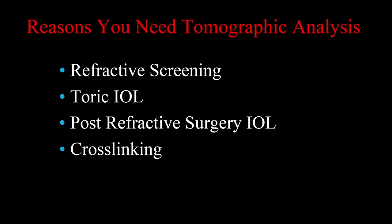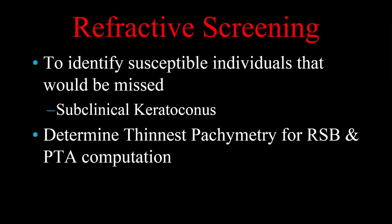So why do you need tomographic imaging or tomographic analysis? We need it for refractive screening, for toric IOLs, often for keratoconus, for post-refractive IOL computations, and particularly for cross-linking. Three of these at least are relevant for keratoconus. The main use for refractive screening is to identify susceptible individuals that would otherwise be missed — we call this subclinical keratoconus. We also need to know the true thinnest point of the cornea to do true residual bed and PTA computations.